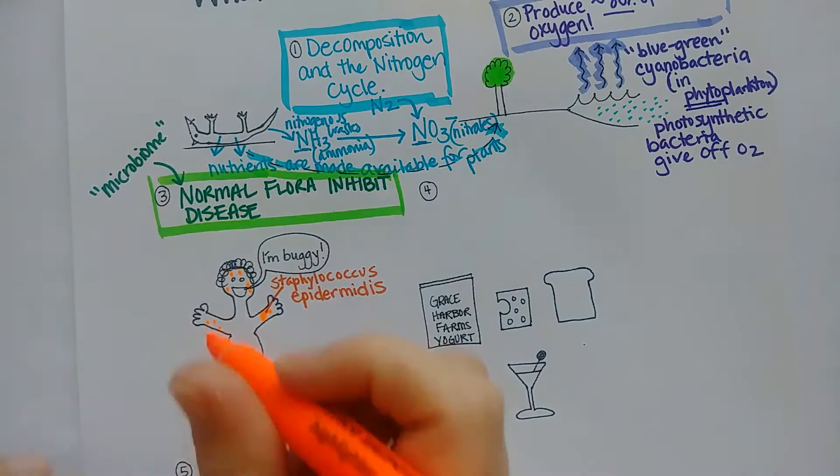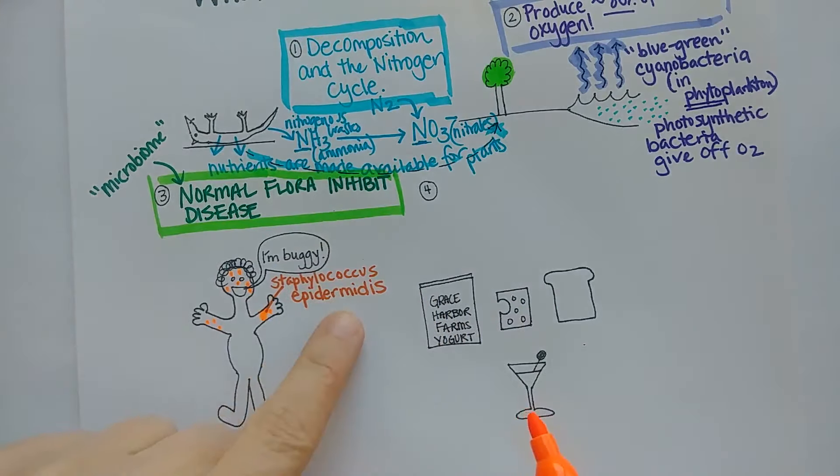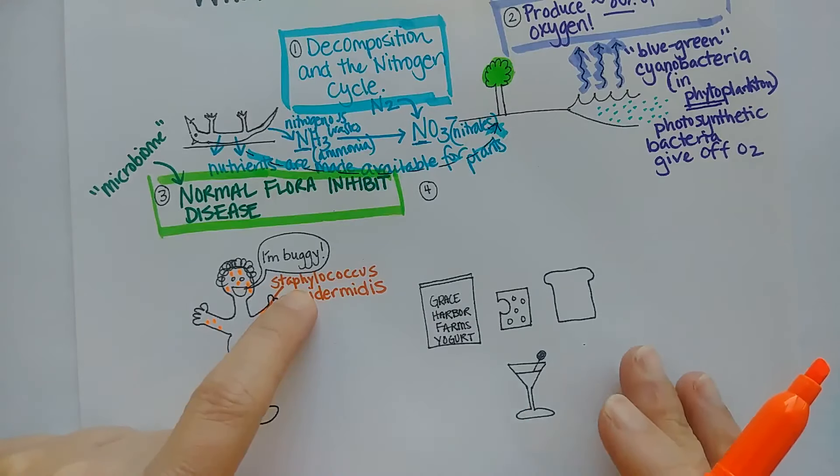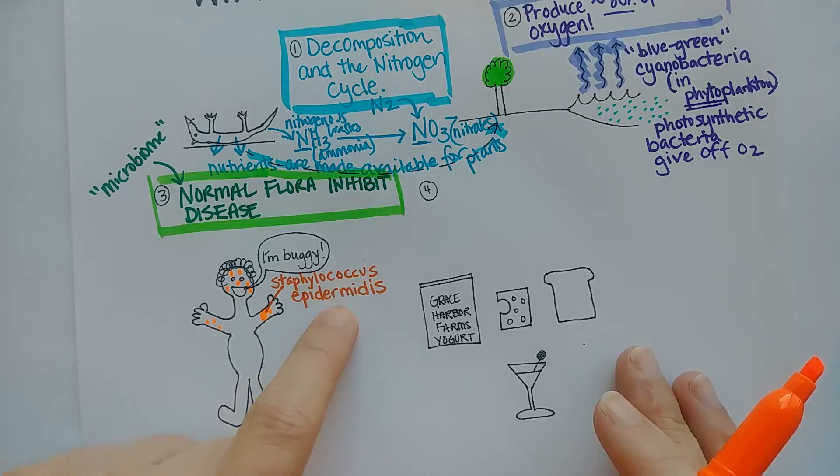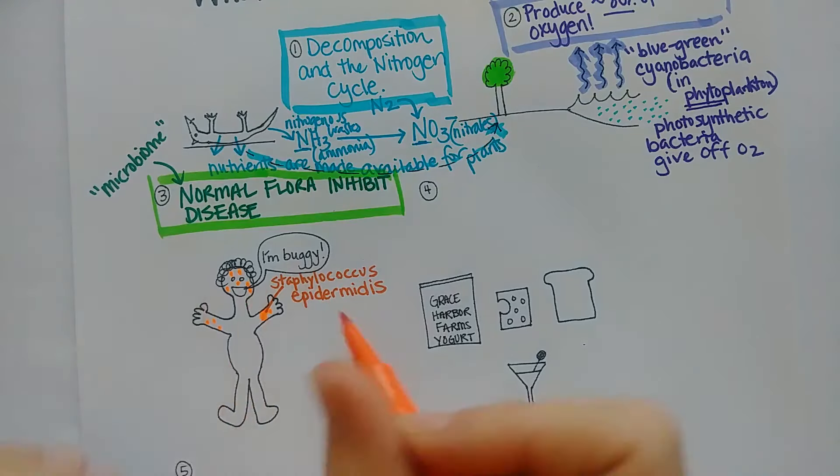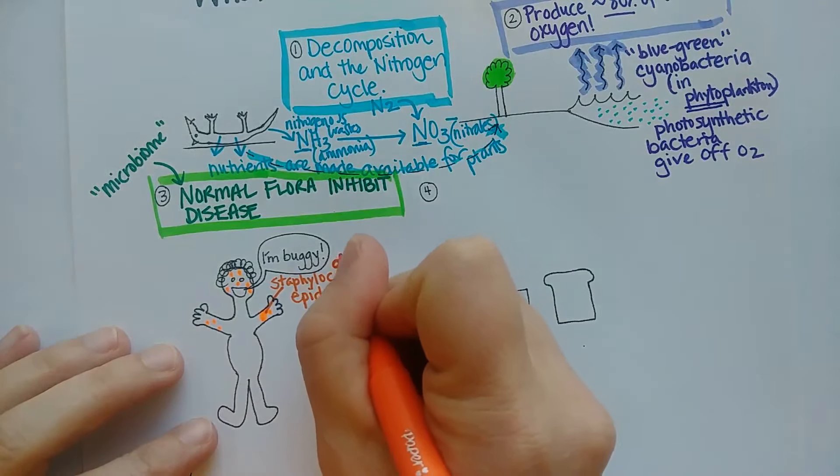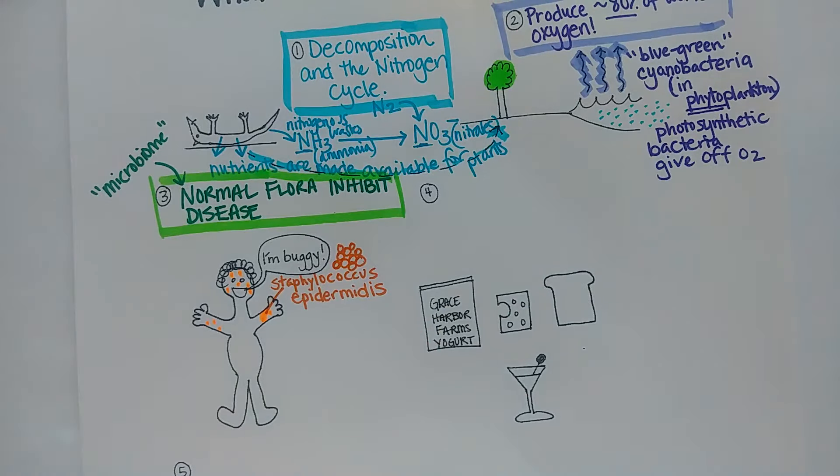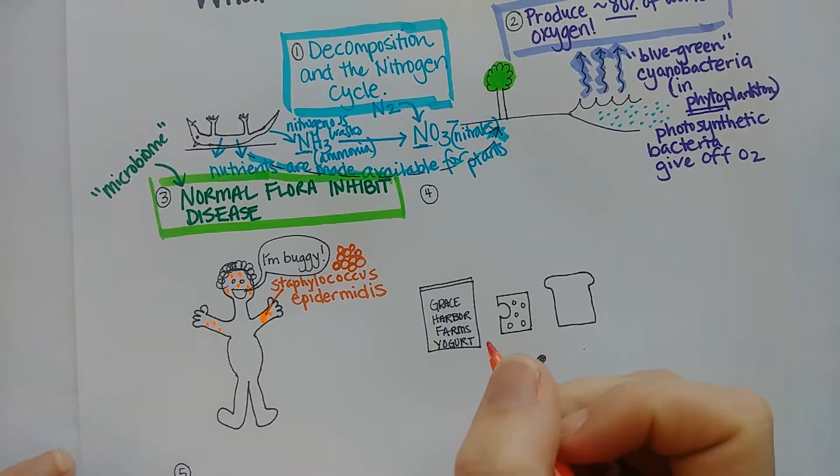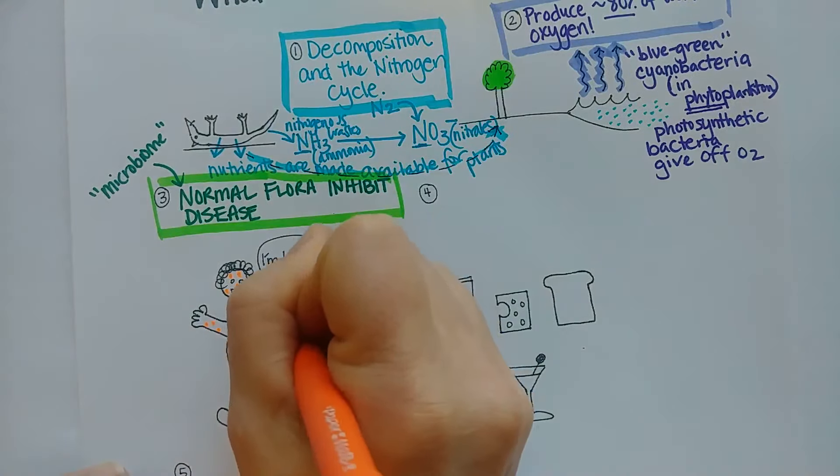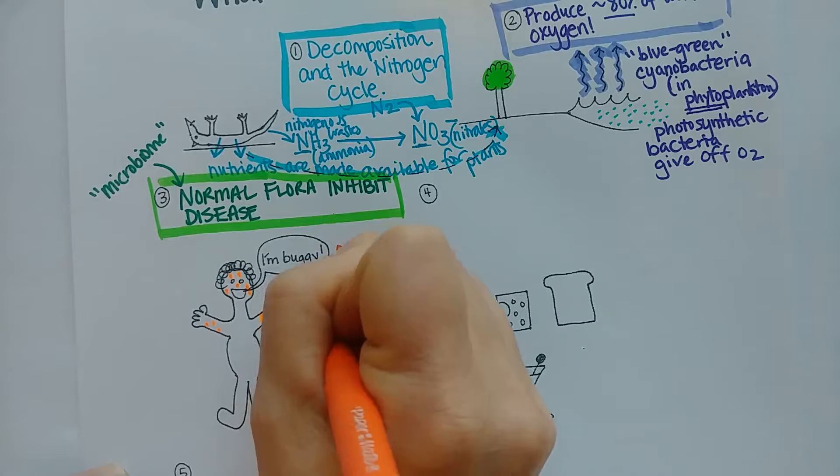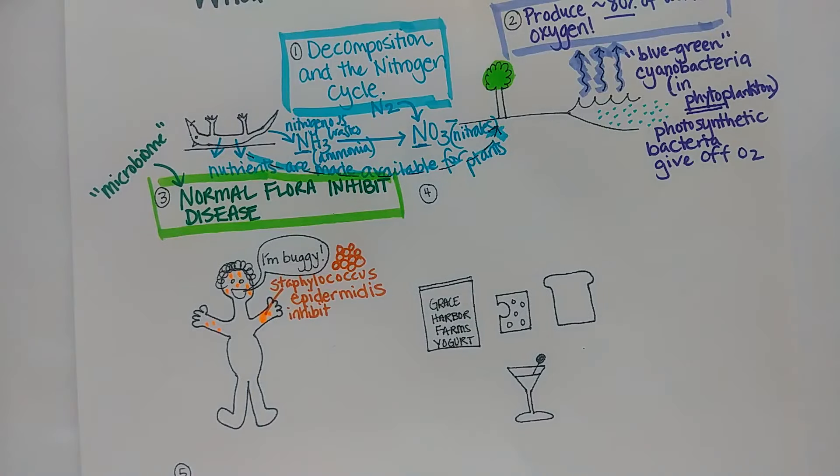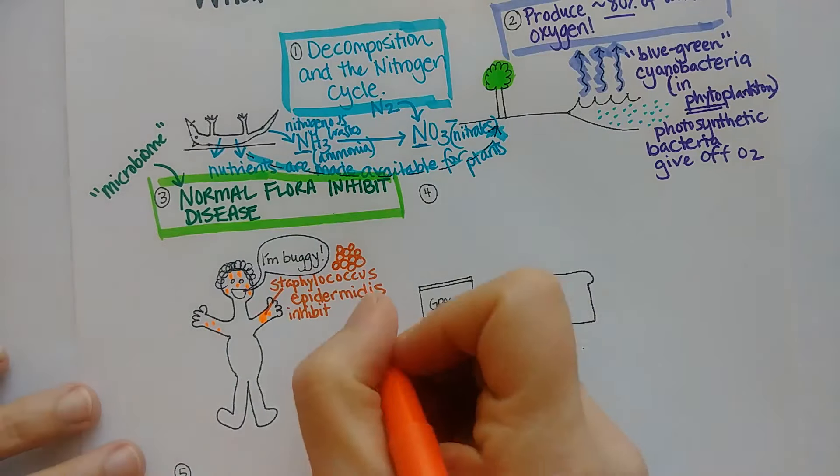This bacteria is so common on your skin that's how it got its name. The root word staphyl means cluster, coccus means sphere, and epidermis means skin. So these are clusters of sphere-shaped bacteria that grow on our skin. Thanks to them, amongst all the other hundreds of species that are on your skin, they inhibit fungal growth.